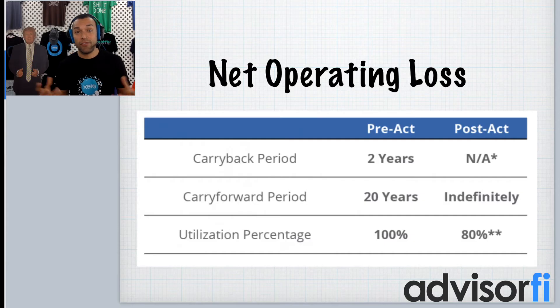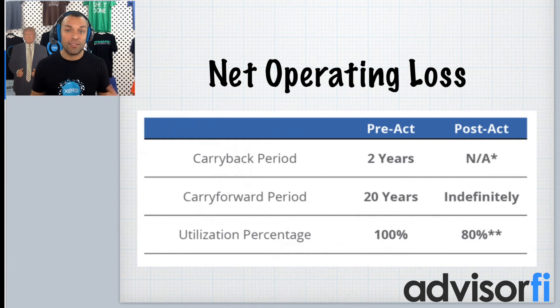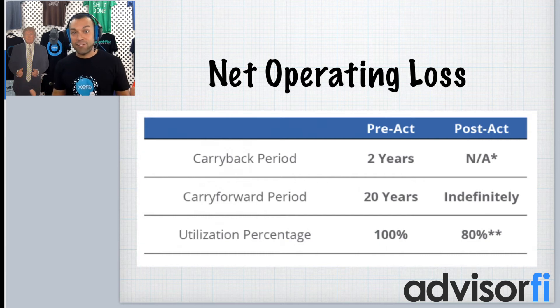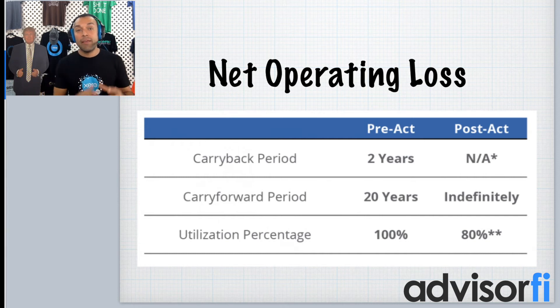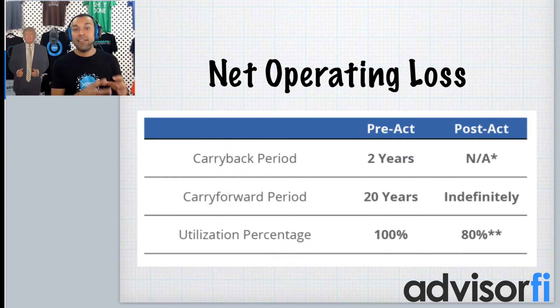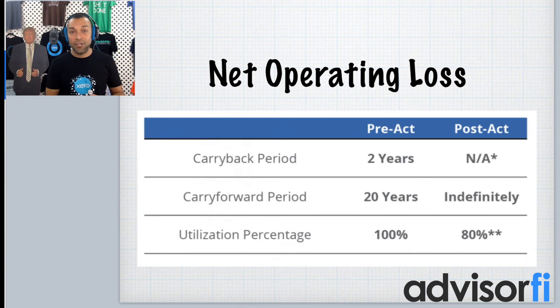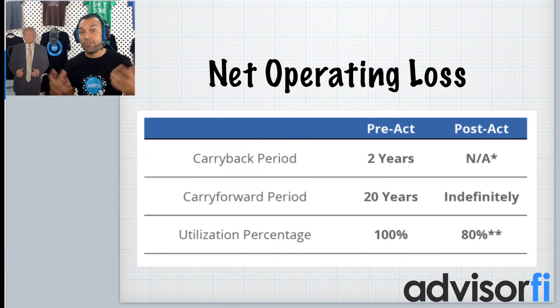We have enough time for a bonus tip! There is another caveat for C corporations in the tax reform: its utilization percentages. This basically means that if you have a loss, in the old law you could actually utilize that loss 100%. If your business had a loss of $10,000 and then the next year you had a $10,000 profit, you could utilize 100% of that loss against 100% of that net income. But in the new reform, that utilization is actually limited to 80%. So if you had a $10,000 loss that you were carrying forward and the next year you had a $10,000 profit, you can only use 80% of that $10,000 loss — so $8,000 of the loss gets applied to the $10,000 net income. There's a limitation as far as the net operating loss utilization.